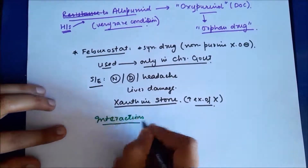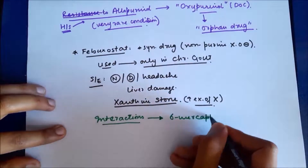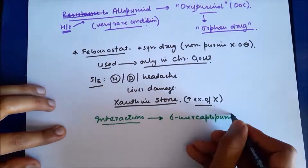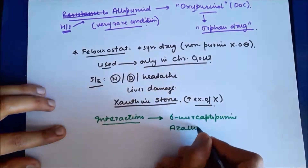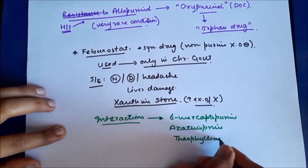Febuxostat has the potential to interact with certain drugs such as 6-mercaptopurine, azathioprine, and theophylline.